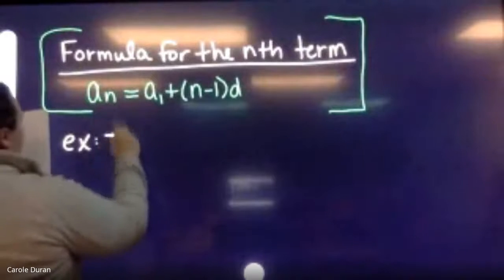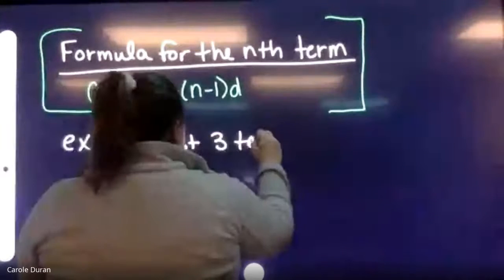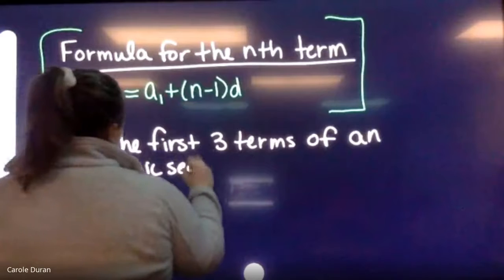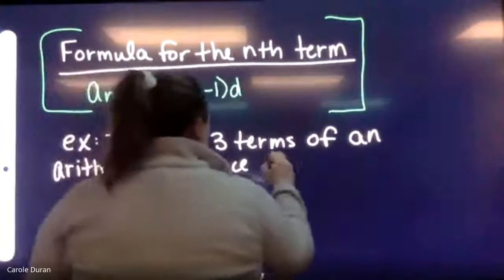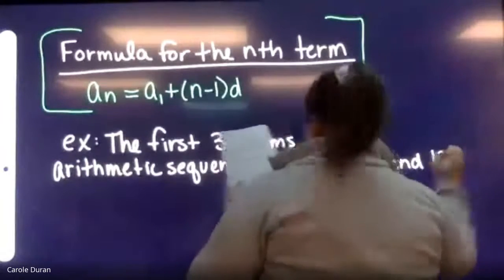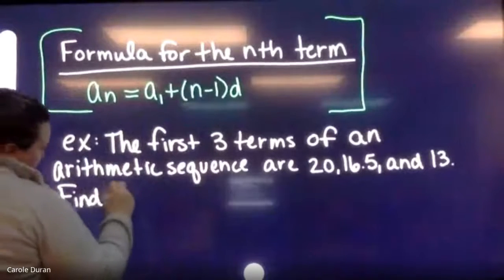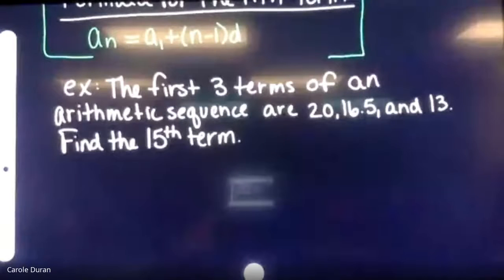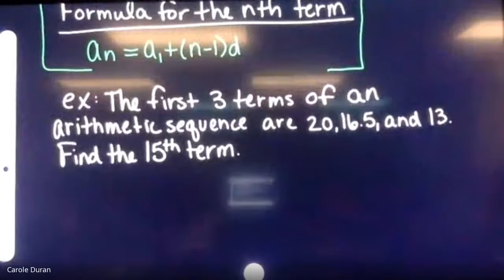Given the first three terms of a sequence — 20, 16.5, and 13 — we're going to use the explicit rule formula to write that rule for this sequence. I need to know two things: a1 (the first term) and the common difference d.